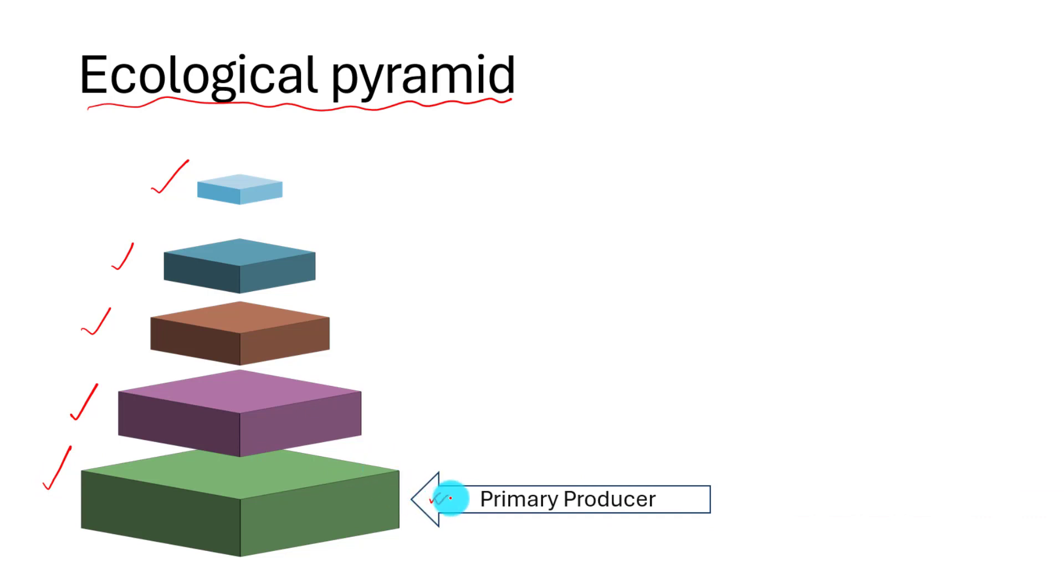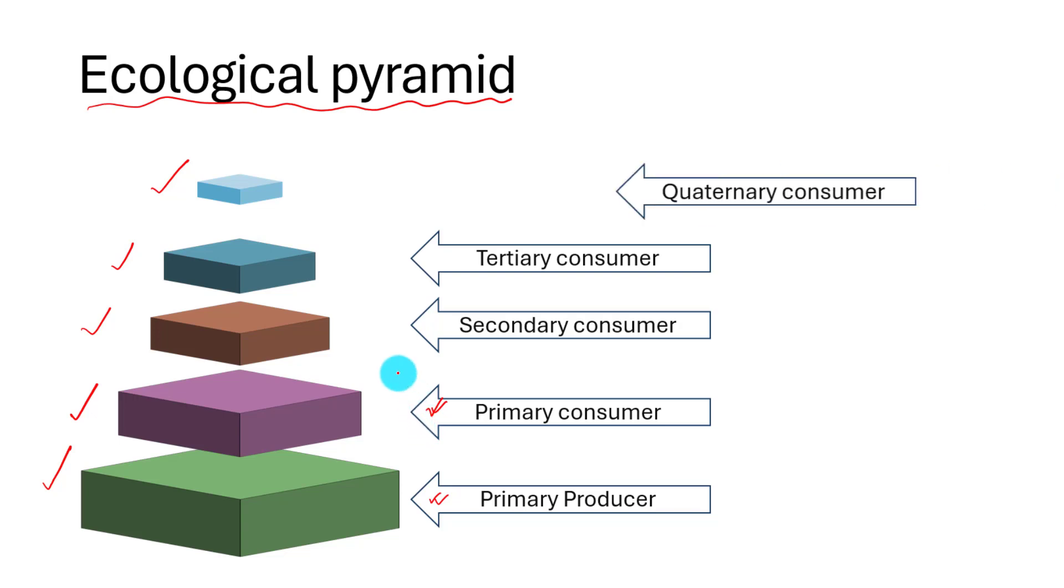Usually, primary producers are represented by the bottom base of the pyramid. Primary consumers are represented by the next base of the polygon, and so on. The top area represents the top predators.